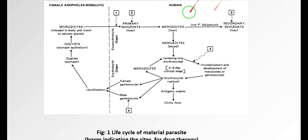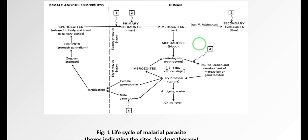What happens is that the merozoites, upon rupturing the hepatocytes, enter into the blood. The secondary schizonts convert into merozoites as well. These merozoites then infect the erythrocytes, or red blood cells.